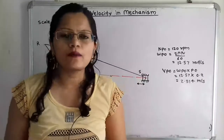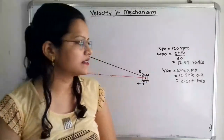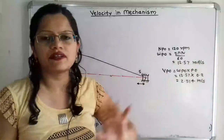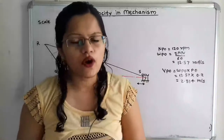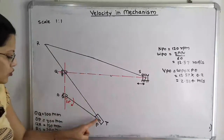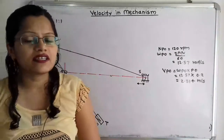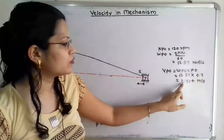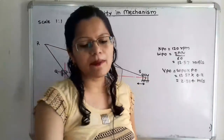From the given 120 rpm we calculate angular speed: omega = 2πN/60 = 2π × 120 / 60 = 12.57 radians per second. From this omega we calculate linear velocity: V = omega × r, where r = OP = 200 mm = 0.2 m. So V = 12.57 × 0.2 = 2.514 m/s. This is the magnitude of the velocity of P with respect to O.